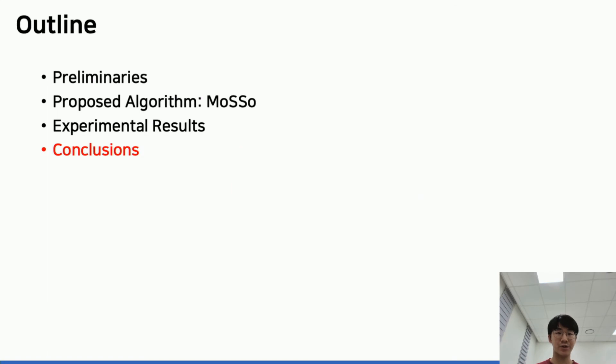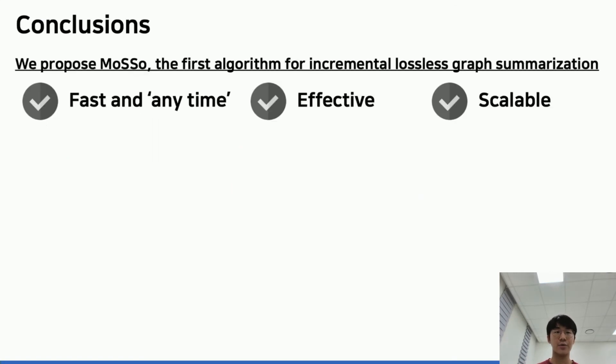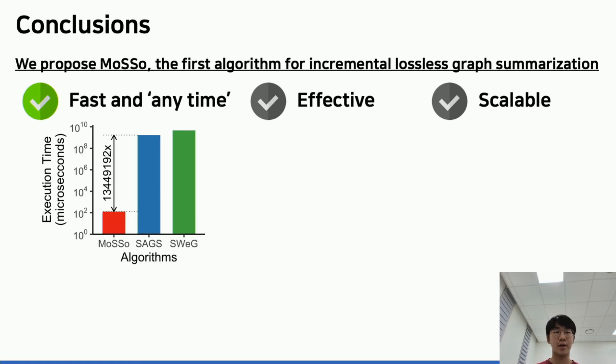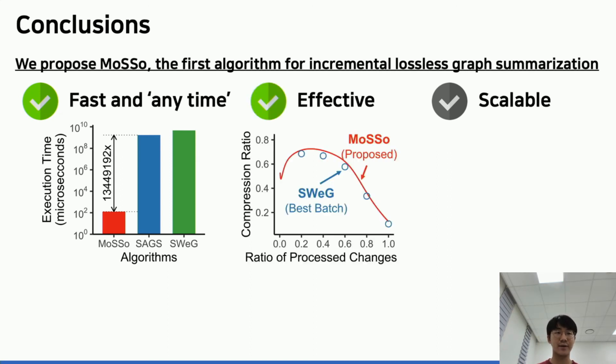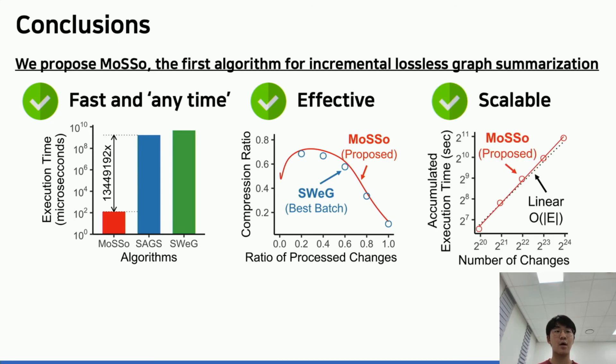Let's wrap up the presentation. We propose MoSso, the first algorithm for incremental lossless graph summarization. We empirically and theoretically show that MoSso has several strengths. First, MoSso is fast and anytime. It updates its lossless summary up to 7 orders of magnitude faster than the fastest batch algorithm. MoSso is effective - its compression ratio is comparable to that of state-of-the-art batch algorithms. Also, MoSso is scalable. It successfully summarizes a fully dynamic graph with up to 2.3 billion edges and updates in near constant time.